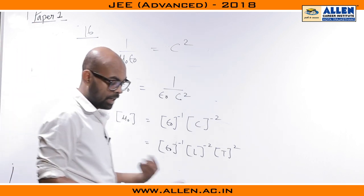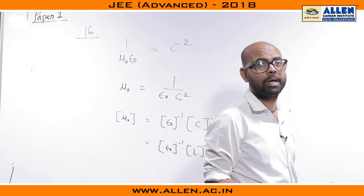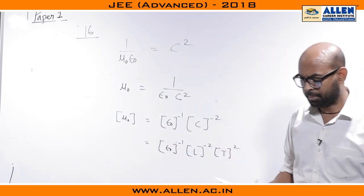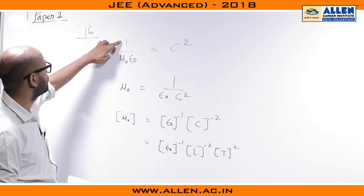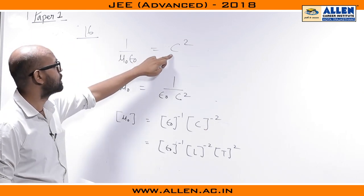They want us to calculate the dimensional relation between μ₀ and ε₀ where μ₀ is the permeability and ε₀ is the permittivity. We have to find out the relation. We know the very standard relation 1 upon μ₀ε₀ is equal to c².